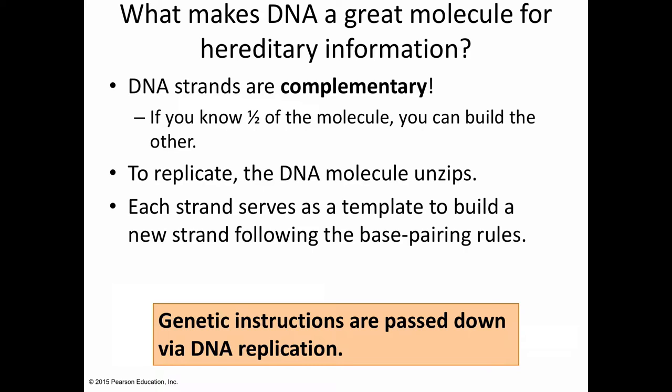If you only need a little part of the DNA, you would just unzip one part and copy that part. When the DNA molecule unzips — with the help of an enzyme that acts like scissors, cutting those hydrogen bonds — it unzips just like a zipper. You can then use each strand as a template to build a new strand following the base pair rules. For example, if you unzipped and had a thymine, you'd put an adenine across from it when building the new strand.